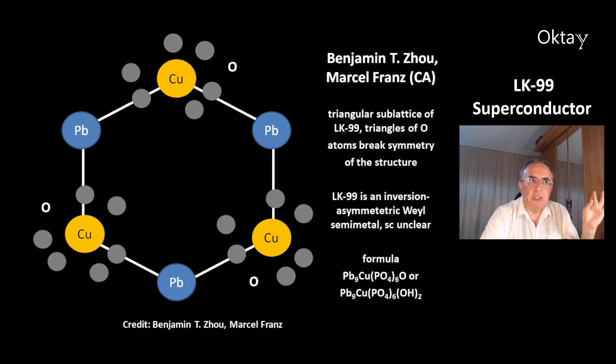This is another work from Benjamin Zhu and Marcel Franz from Canada. They predict a triangular sub-lattice of LK-99, which is shown in this picture. Copper ions are surrounded by triangles of oxygen atoms. They break the symmetry of the structure.